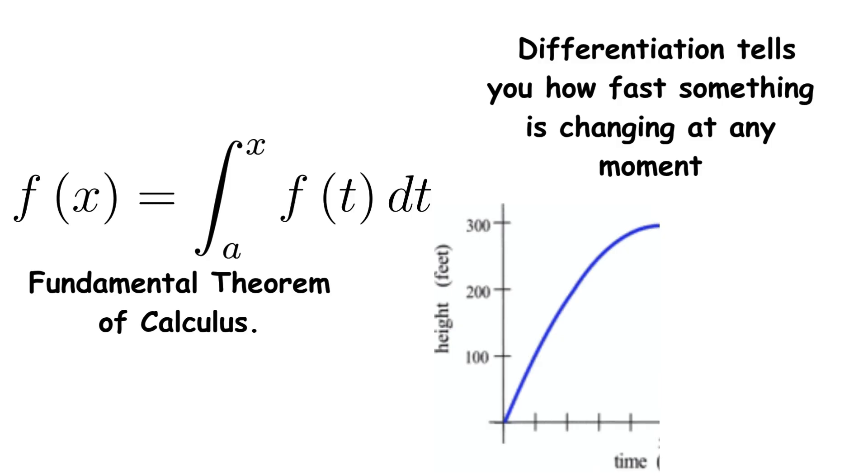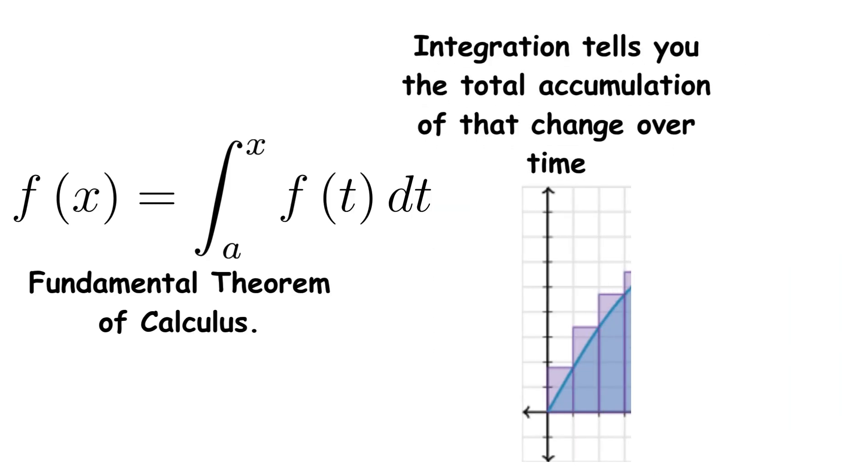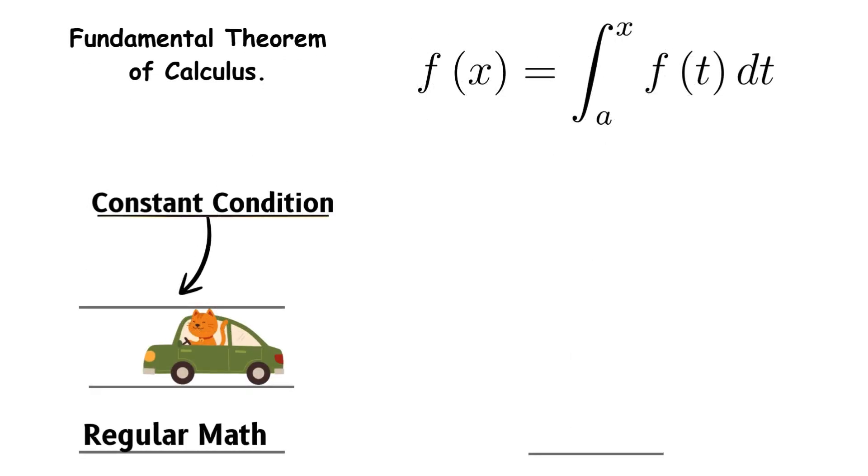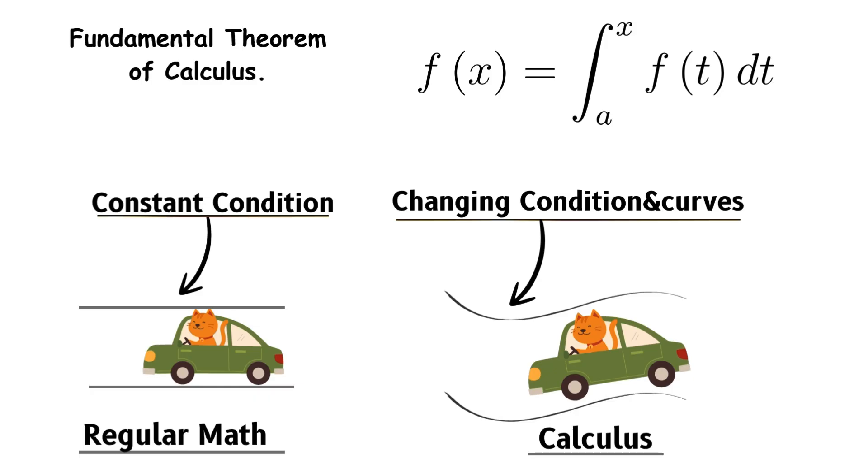In simple terms, if differentiation tells you how fast something is changing at any moment, integration tells you the total accumulation of that change over time. Imagine you're driving a car. Differentiation helps you find your speed at any given instant, while integration helps you calculate the total distance you've traveled.